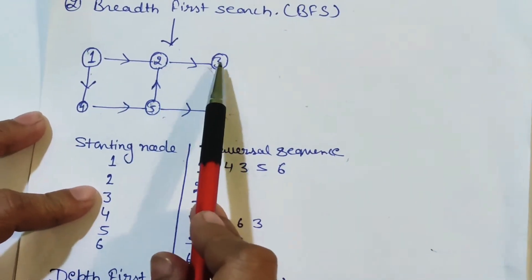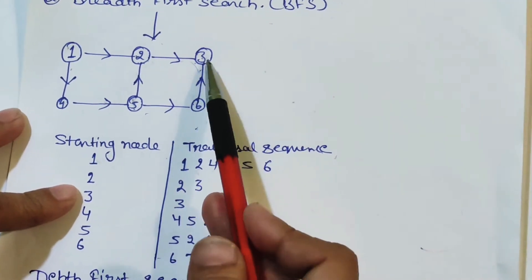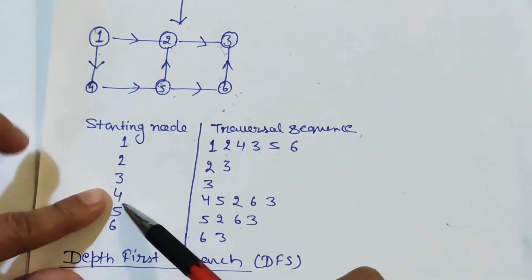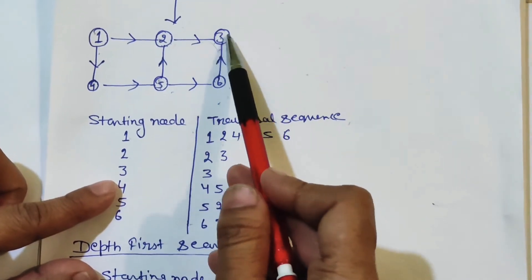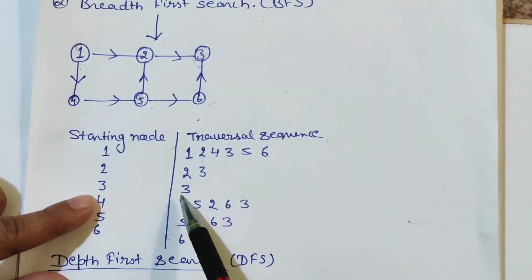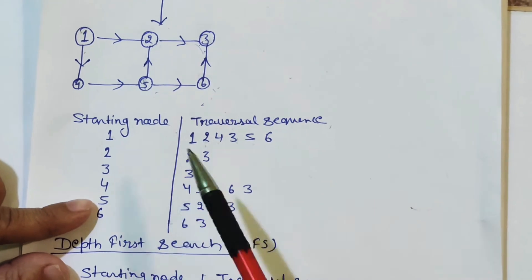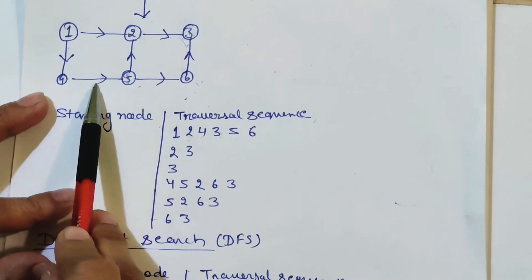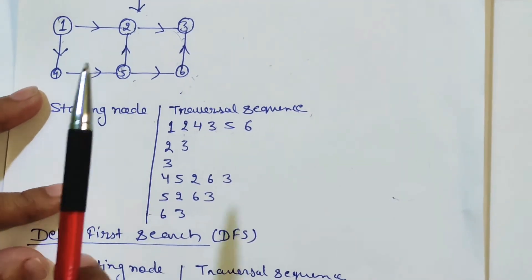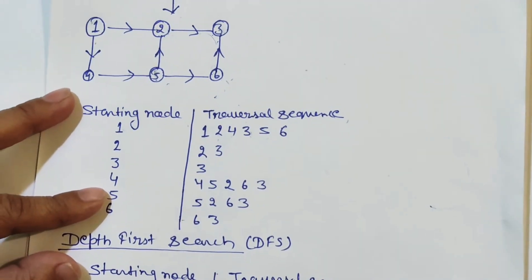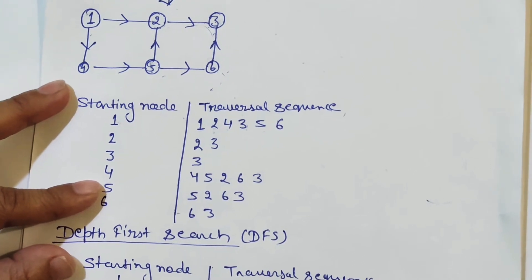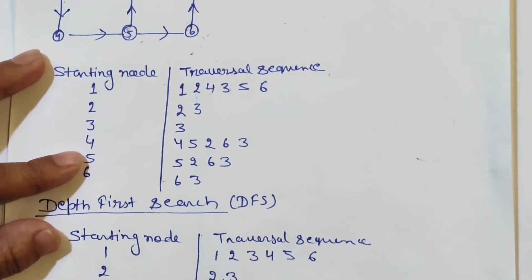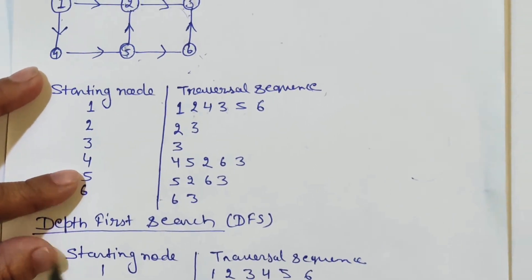From two, we are going to three. There is nothing further ahead. So from two to three. Three is the end; from three we are not going anywhere. From four, we traverse — each element exactly once. Whatever element has already been repeated, we will not visit it again. Traversal means to traverse an element exactly once.